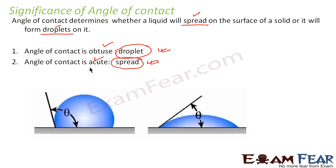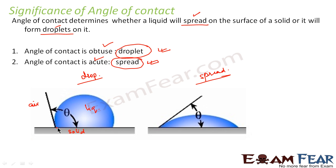Let us understand this with the help of a diagram. We have both scenarios here. In the first scenario, a droplet is formed; in the second, the liquid spreads over the surface. The solid surface is at the base, the liquid droplet sits on it, and air is above. The solid-liquid interface is the line joining the solid and liquid. The solid-air interface extends outward along the solid. The liquid-air interface is the curved surface of the droplet where liquid meets air.